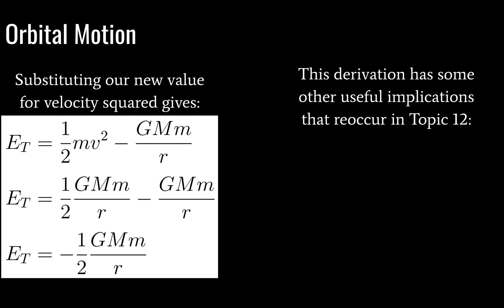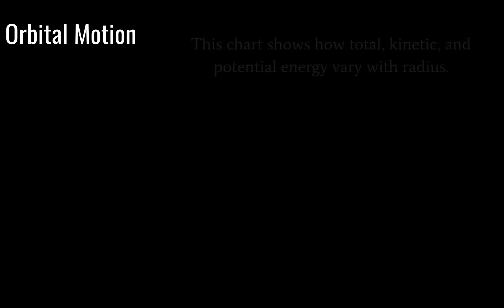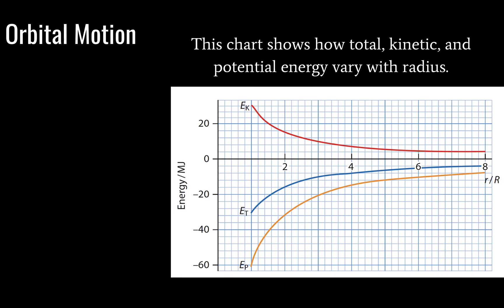You may recognize this from topic 12. Our total energy is equal to kinetic energy minus potential energy, and our potential energy is equal to double our kinetic energy. If you look at the math carefully, you'll note that the kinetic energy is in fact double the potential energy. We can further simplify such that total energy equals negative kinetic energy. We have a chart showing how total energy, kinetic energy, and potential energy vary with radius — all three on one single chart.